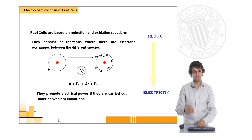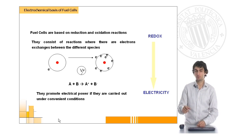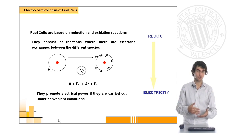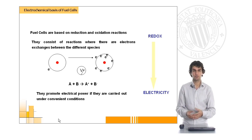This exchange of electrons is going to generate a voltage, which is electrical energy that we can eventually use. It is very important that this reaction takes place under convenient conditions, otherwise this energy cannot be utilized.